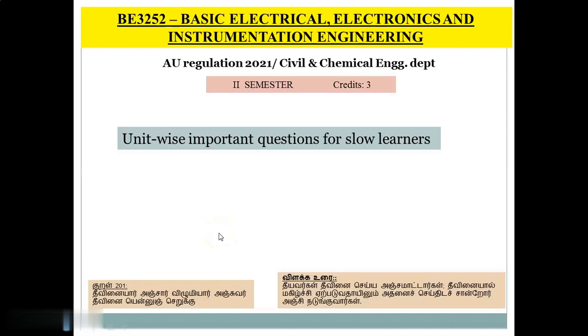Good afternoon to all. BE3252 Basic Electrical, Electronics and Instrumentation Engineering is a subject given in Anonymous Regulation 2021 for second semester Civil Engineering and Chemical Engineering students. It is a 3 credit paper. Dear students, in this video lecture we are going to discuss the unit-wise important questions for slow learners. Let us discuss one by one.